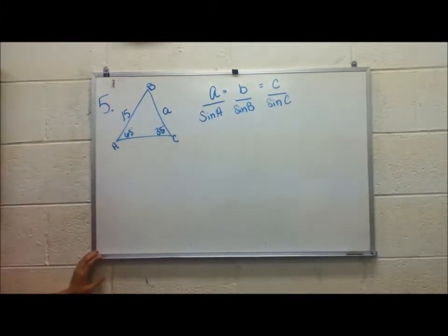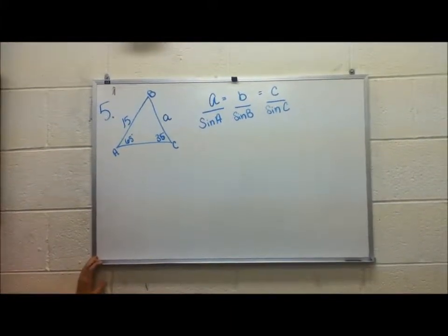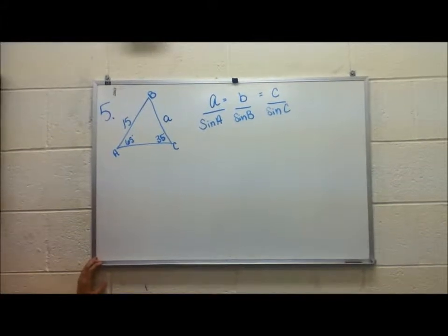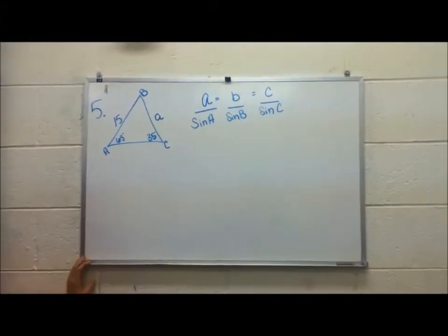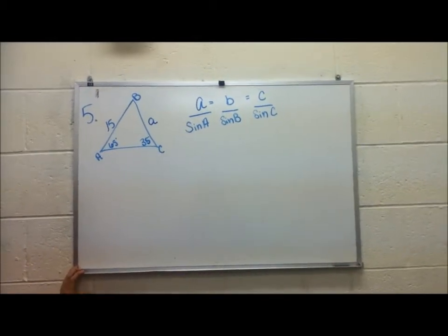In this problem, you're going to use the Law of Sines to solve for the missing side. The Law of Sines equation is A over the sine of A equals B over the sine of B equals C over the sine of C.